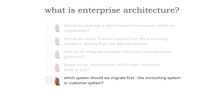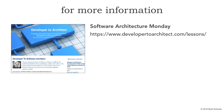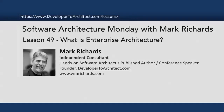This really is what enterprise architecture is all about — at any level, from a multinational company all the way to a small division or group within a large company. We'll be looking at a couple of other aspects of enterprise architecture in the next three lessons. For more information, go to Software Architecture Monday at developer2architect.com/lessons, and see where I'll be speaking at developer2architect.com/upcoming-events.html. This has been Software Architecture Monday, Lesson 49: What is Enterprise Architecture? My name is Mark Richards. Thanks for listening, and stay tuned for the next three Mondays.